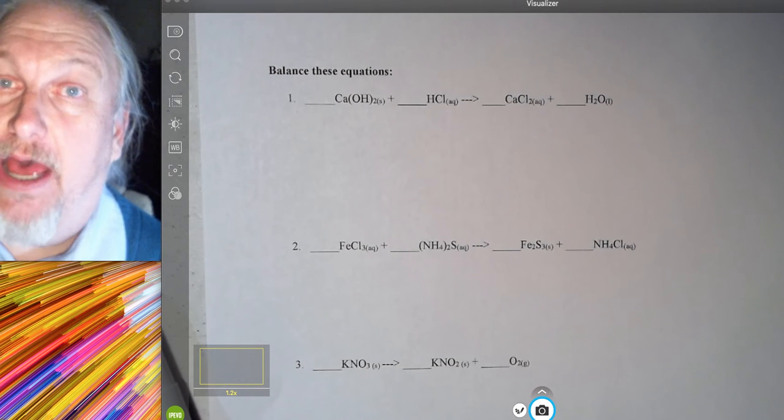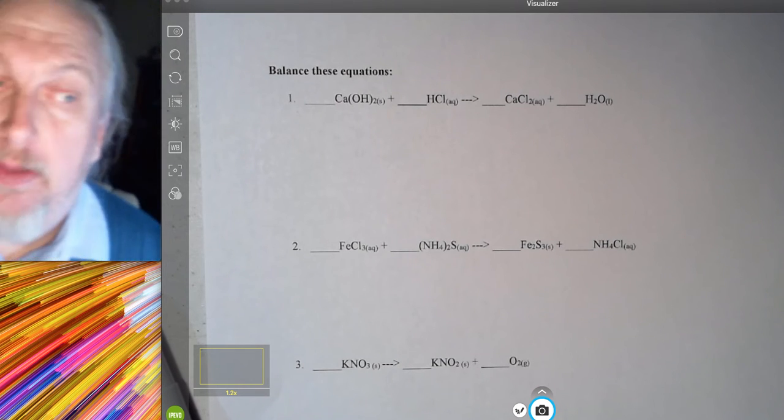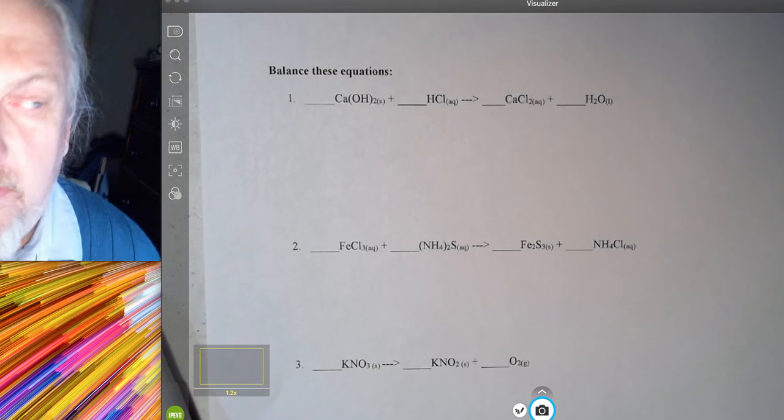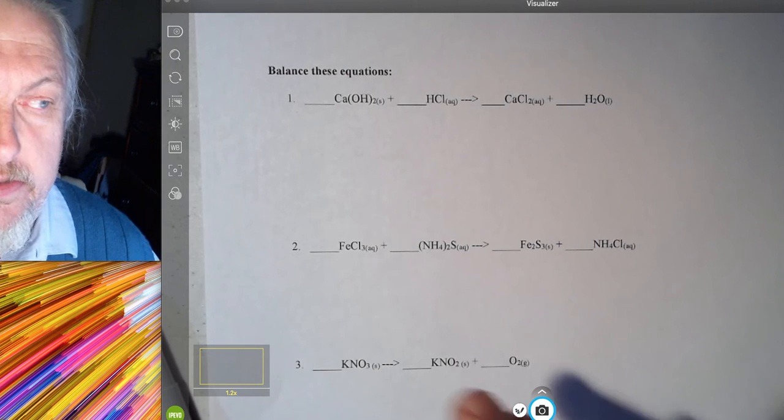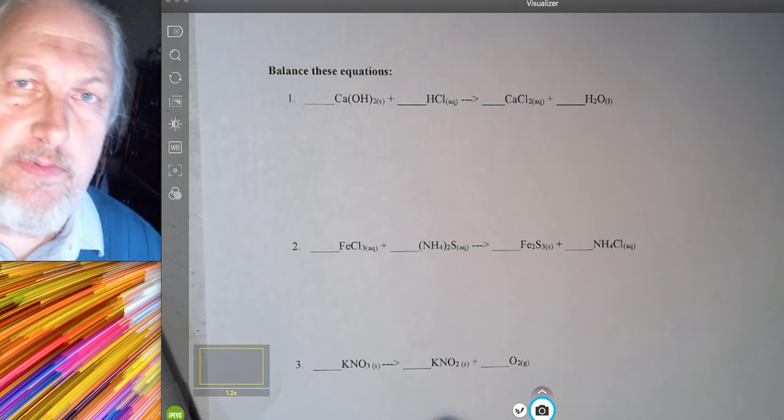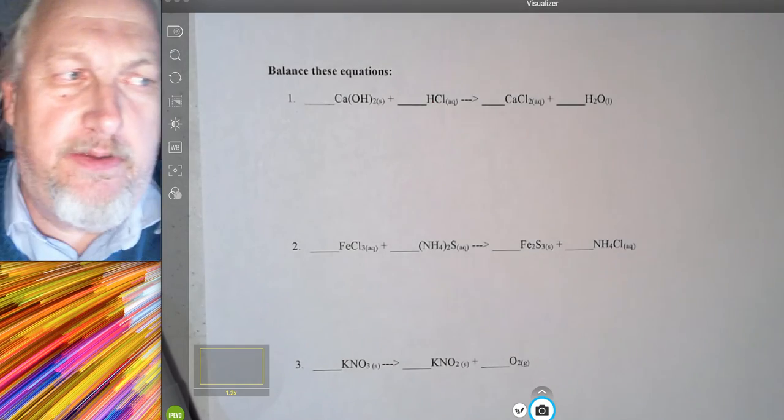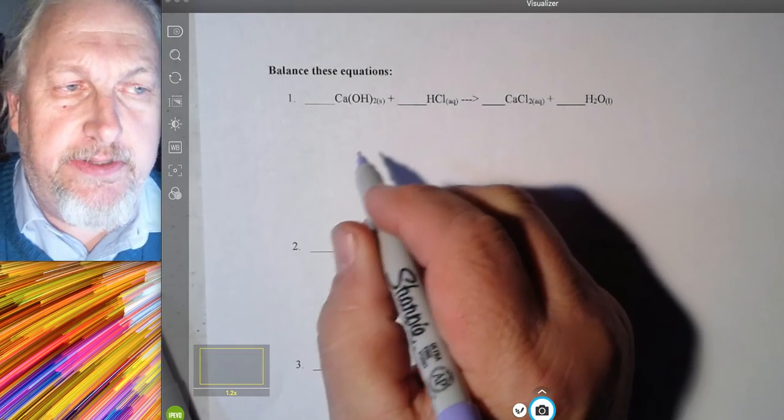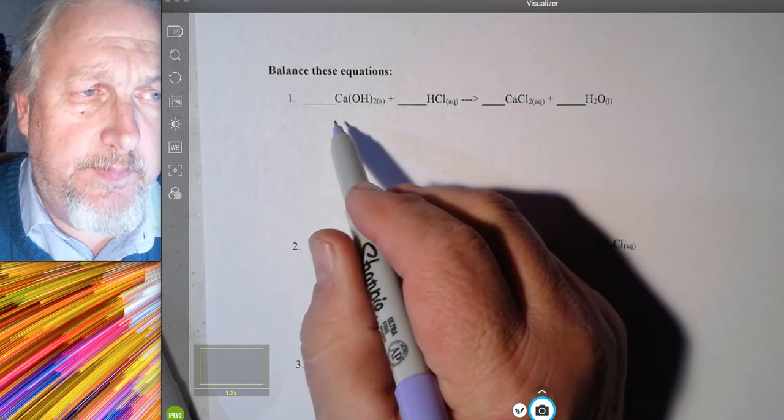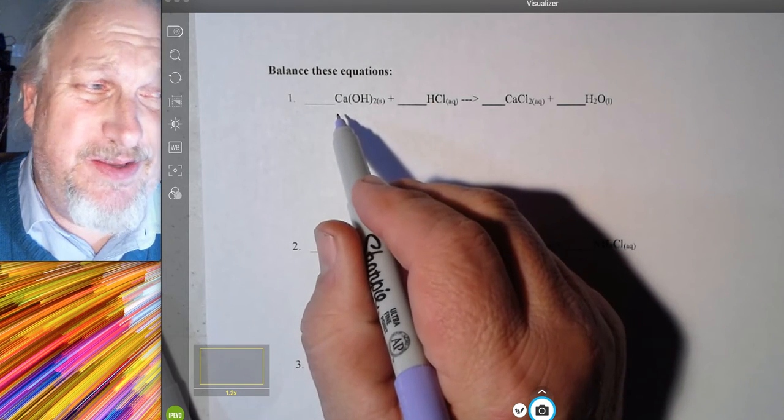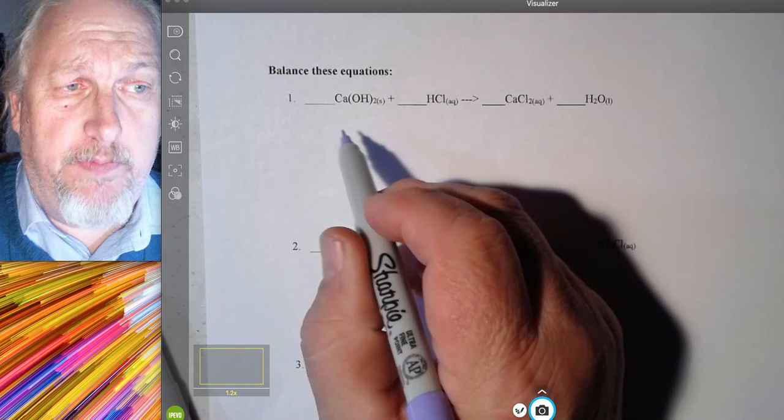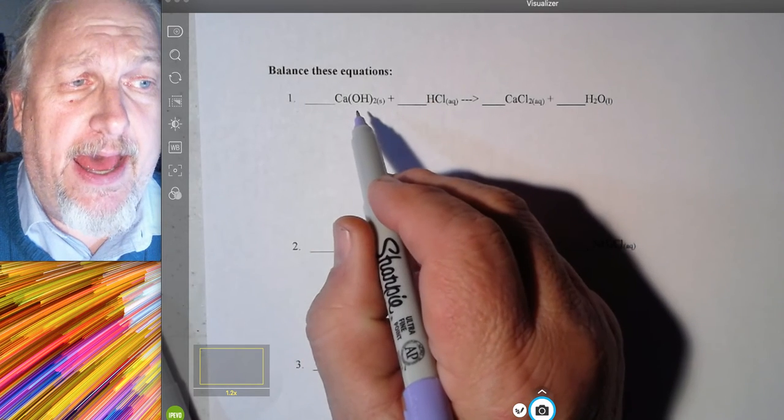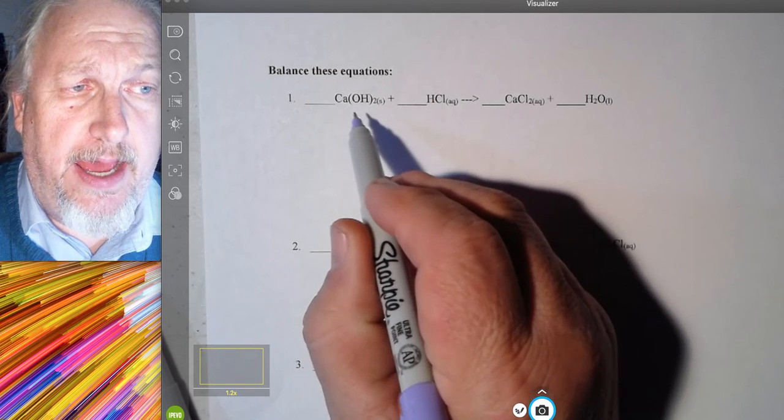Because essentially what we start with is what we're going to finish with. What we start with is what we're going to finish with. And the individual particles, we're going to make sure that we have the same number of particles on the reactant side and on the product side. So if you would, let's dive into this real quick. Now you can look at the symbols, but we're going to talk about what we've got. We've got calcium hydroxide, calcium hydroxide.